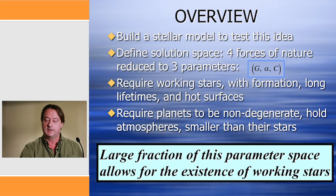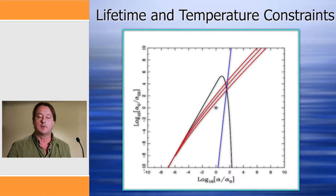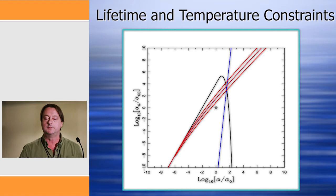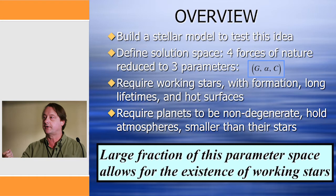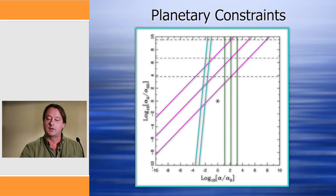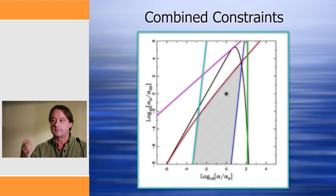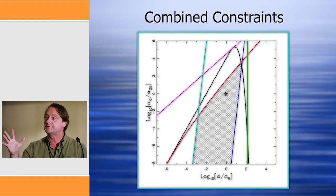Now this might not be enough. You might say you want not just stars — you might want stars to be hot, so you have to fall to the left of this blue line. You want stars to be long-lived, so you have to fall below the red line. Still, making those cuts, you still have a lot of parameter space. You might also want stars to be able to form, want gas to cool, want planets to be non-degenerate yet massive enough to hold atmospheres and yet smaller than their stars. When you put all of these parameters together, you are left with the hatched region in this diagram. You can still vary alpha and G by orders of magnitude in several directions given by this polygon and still allow for working stars with all eight of those properties.